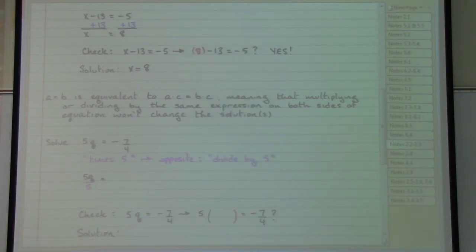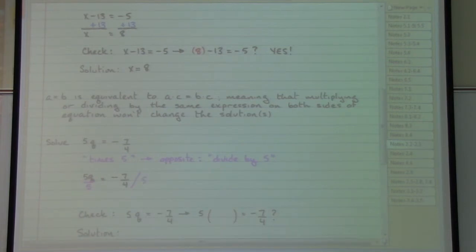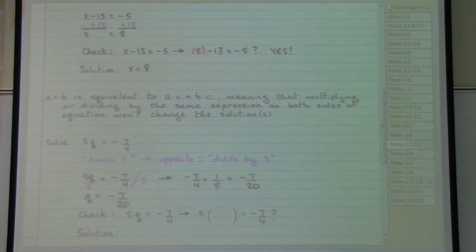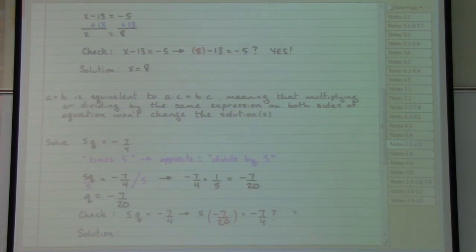On the right side we have negative 7 over 4, and we also divide by 5. That means we're looking at negative 7 over 4 times 1 over 5. Multiplying straight across gives us q equal to negative 7 over 20. If we check that answer by substituting back, we do in fact find that it works out correctly. So our solution, q equals negative 7 over 20, is correct.